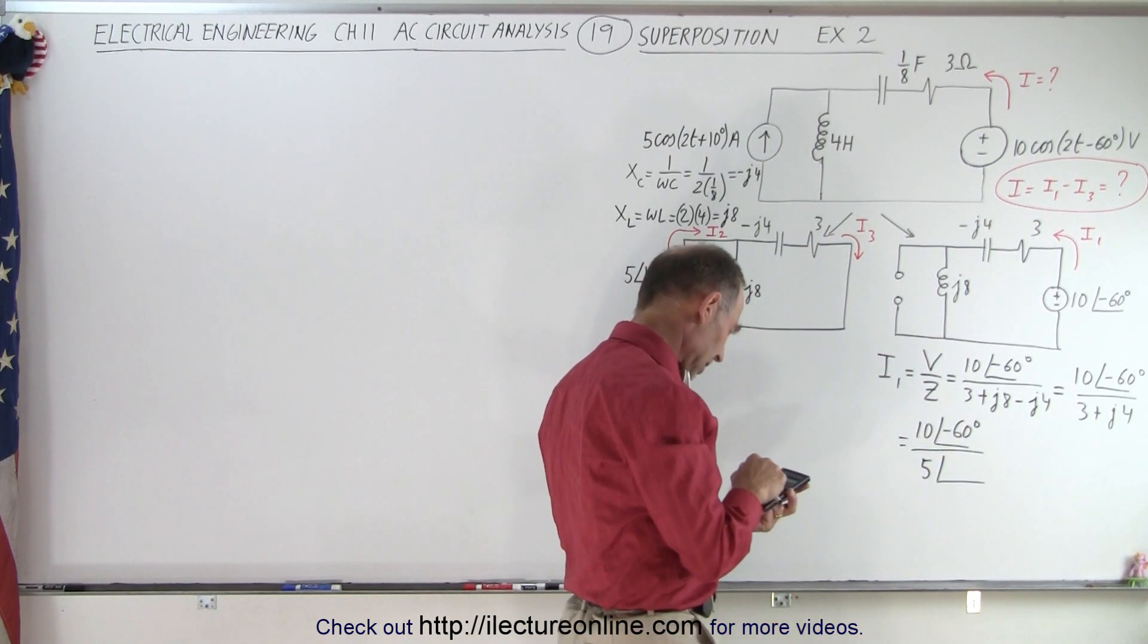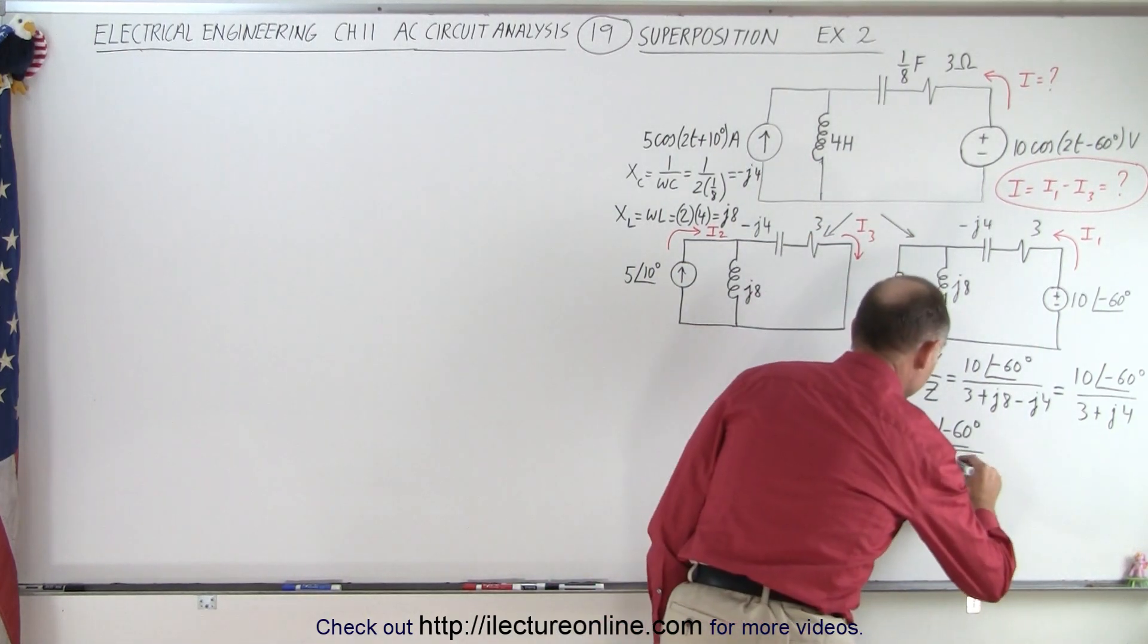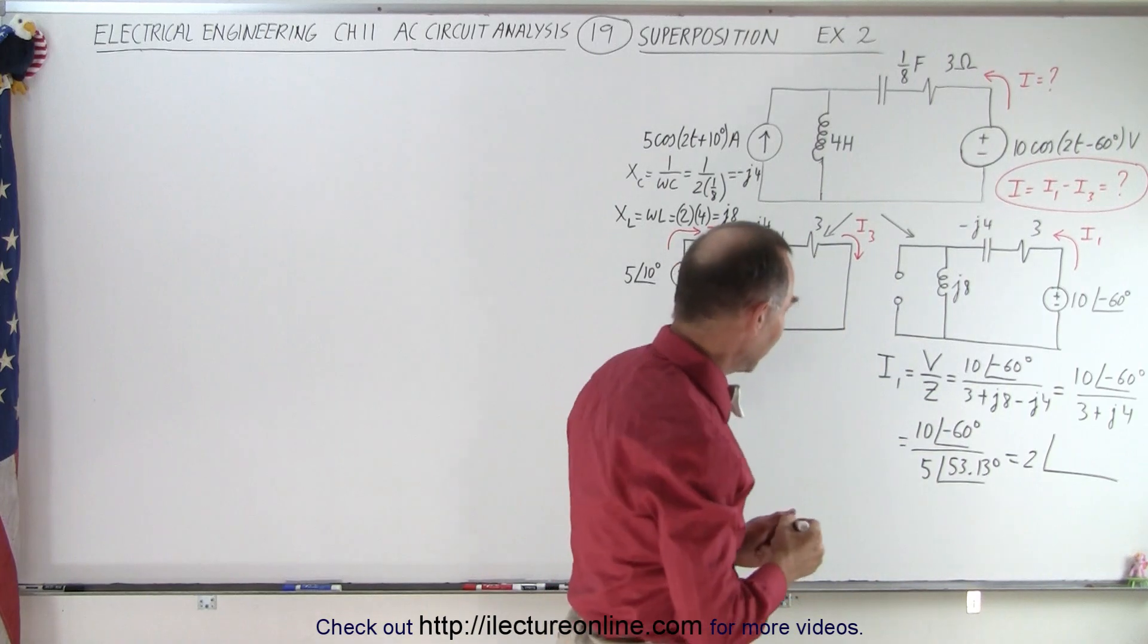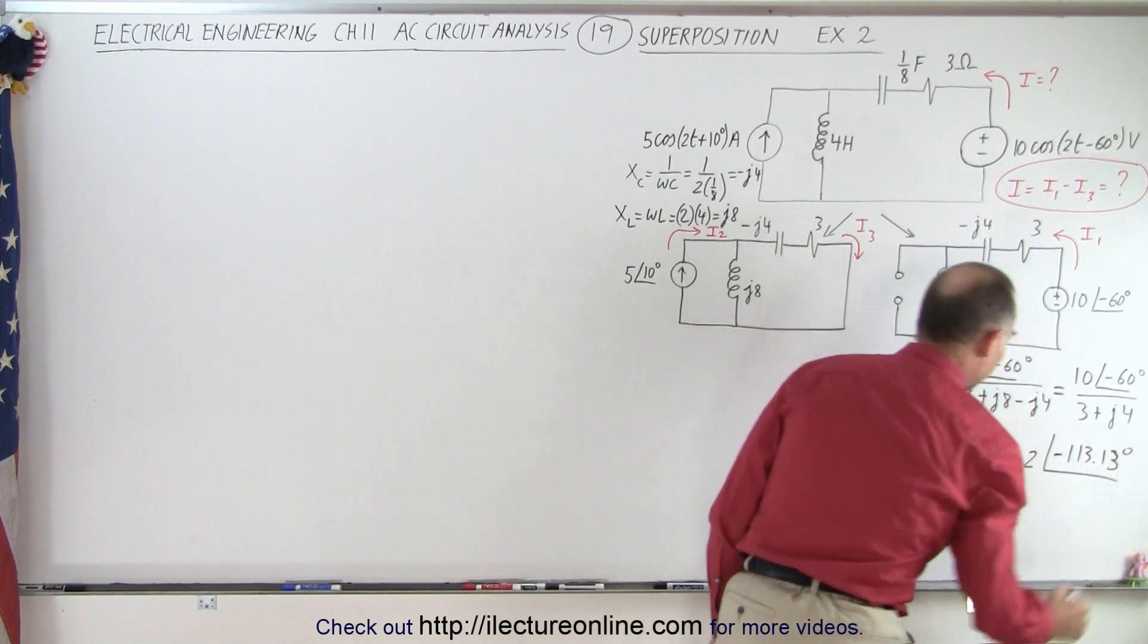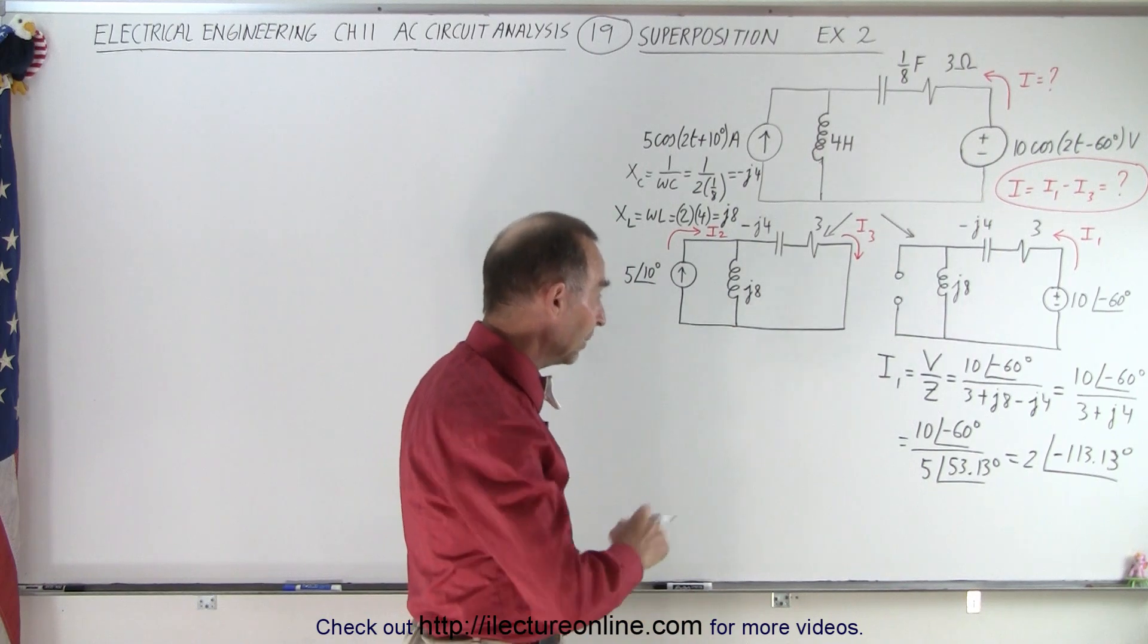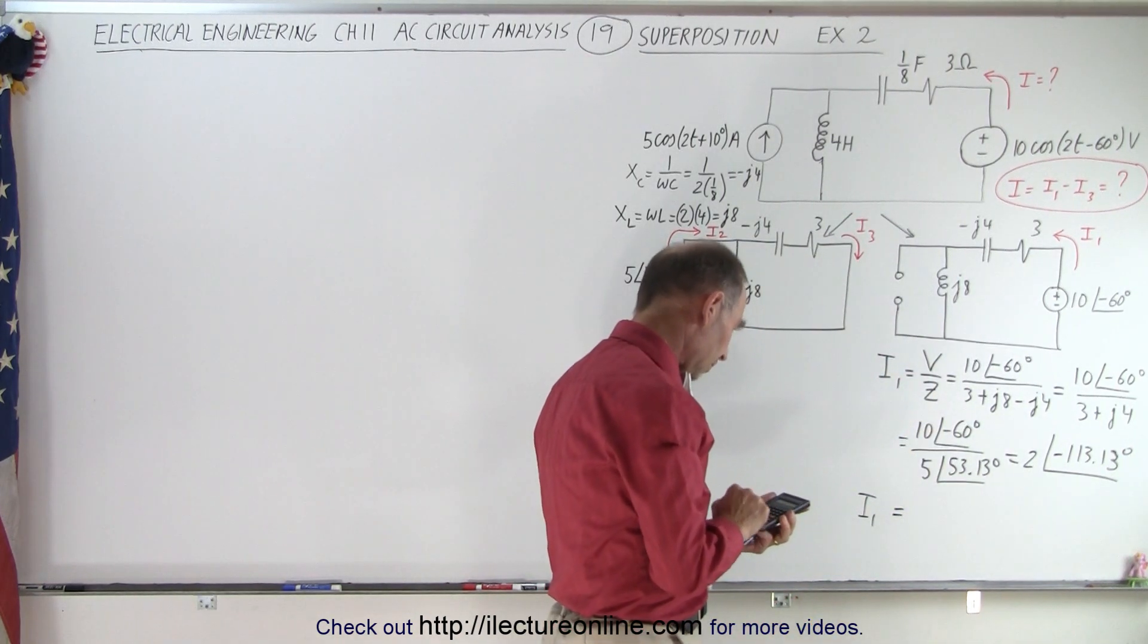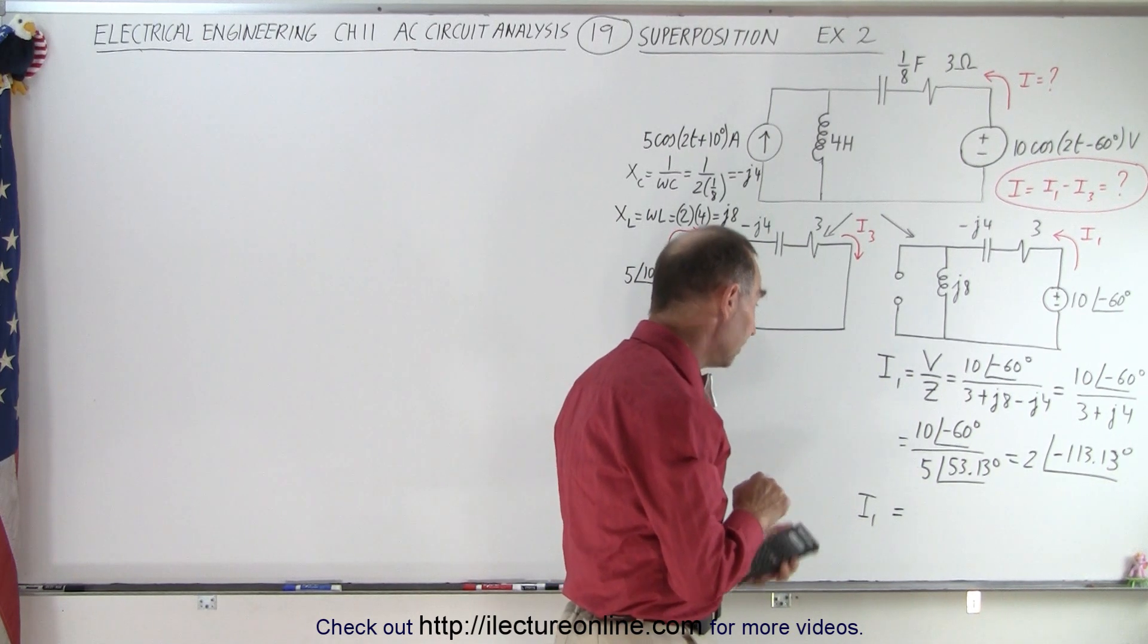That's 4 divided by 3, then take the inverse tangent, 53.13 degrees. 10 divided by 5, which is 2, and the phase angle of minus 60 minus 53, that would be minus 113.13 degrees. And then we want to convert that into real and imaginary parts. So this is equal to I1, 2∠-113.13°.